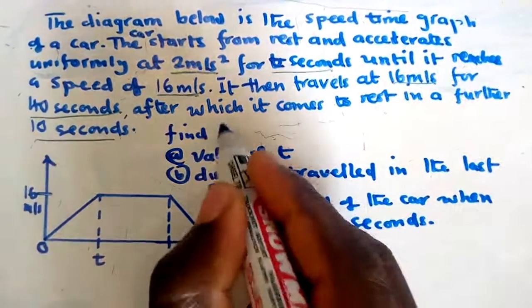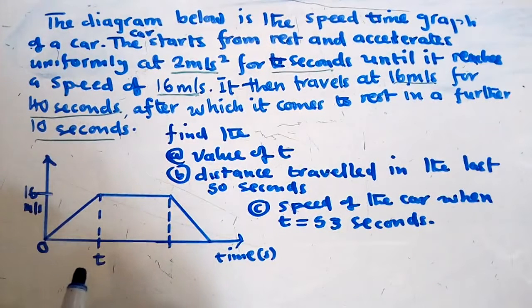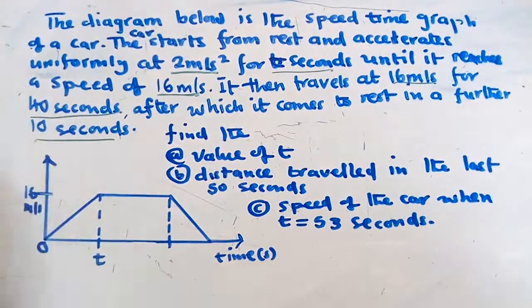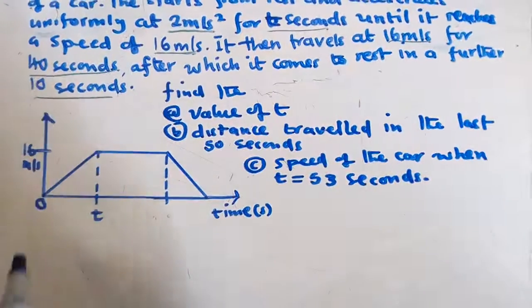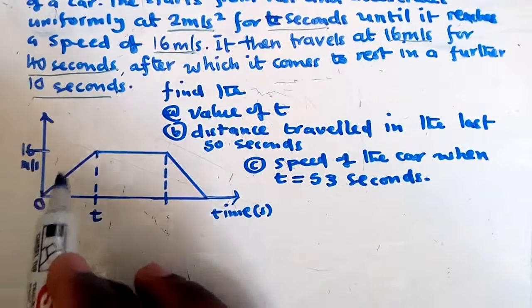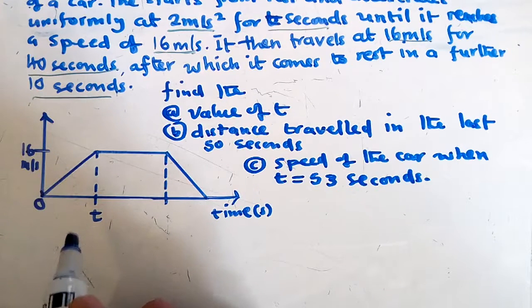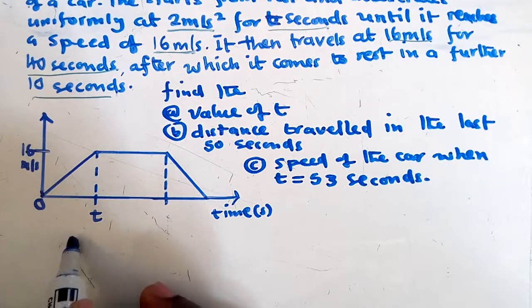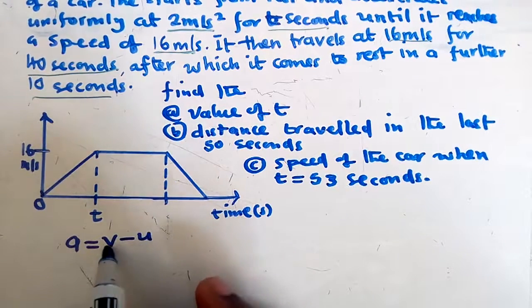The first question says: find the value of t. As you can see on the diagram, there is a point marked t and we need to find it. We'll use what has been said in the question — the acceleration was 2 meters per second squared from the start up to where the car reached its maximum speed.